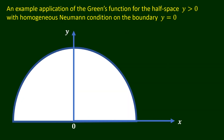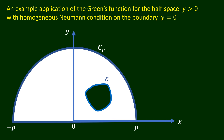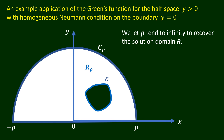To derive a boundary integral solution for the potential problem under consideration, we model the solution domain r in a limiting sense. Consider the semicircular region bounded by the x-axis and the circle x squared plus y squared equals rho squared in the half space y strictly greater than 0. The boundary of the semicircular region comprises the semicircle denoted by c_rho and the straight line on the x-axis from x equals minus rho to x equals rho. The interior boundary c lies inside the semicircular region, and the region between c and the boundary of the semicircular region is denoted by r_rho. The solution domain r can be recovered by letting the radius rho tend to infinity.